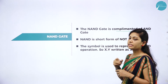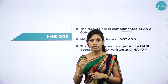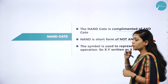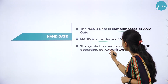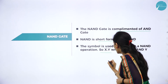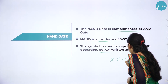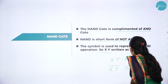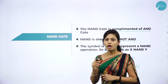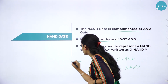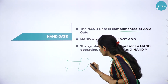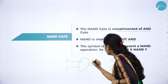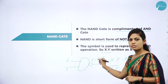NAND gate is the complement of AND gate. NAND is short for NOT AND. In AND gate we use logical multiplication, so NAND uses X · Y whole bar. The logic symbol of NAND gate is the AND gate symbol with an inverter (bubble). F = (X · Y)̄. How to write the logic diagram: two or more input signals, AND gate symbol, then inverter — output is X · Y whole bar.